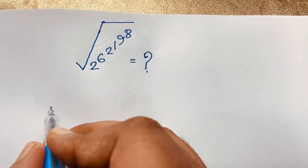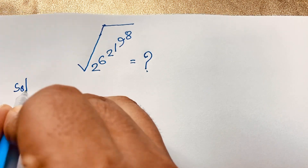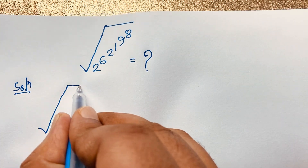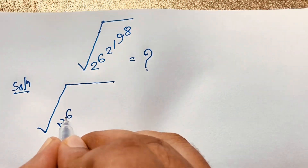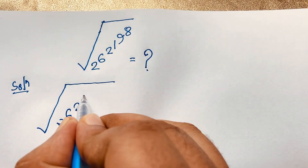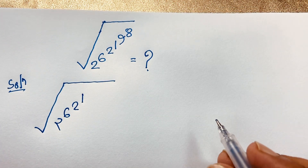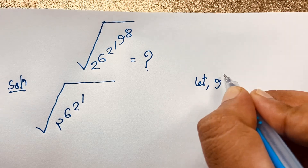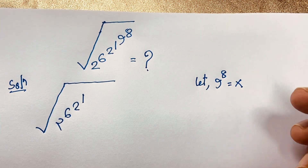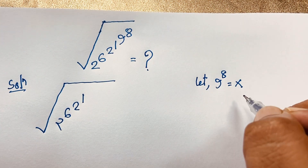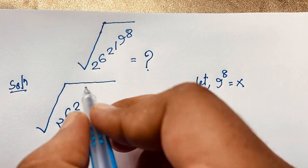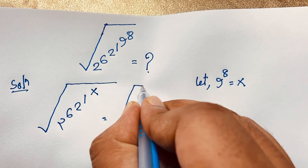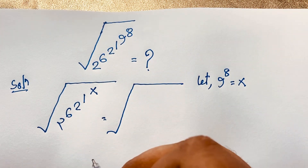Our math solution: we take the square root, then it will be 2 to the power 6, and 6 to the power 2, and 1 to the power — and 9 to the power 8. I can see here that 9 to the power 8 will be x. So I put this x here, so it will be 1 to the power x.